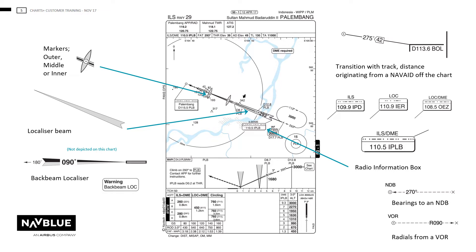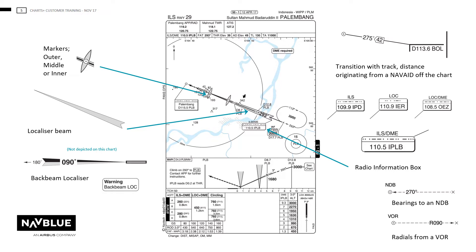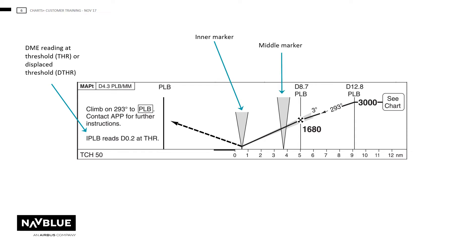Radials and bearings from or to an aid. Here we have the profile for the ILS runway 29. The scale will normally be the same as the plan view. Exact values will be published when shown by the state and a profile will be drawn from the right or left in accordance with the chart procedure. The DME distance to threshold when officially published by the authorities or by an obvious calculation. The inner marker and middle marker will also be shown on the plan view.